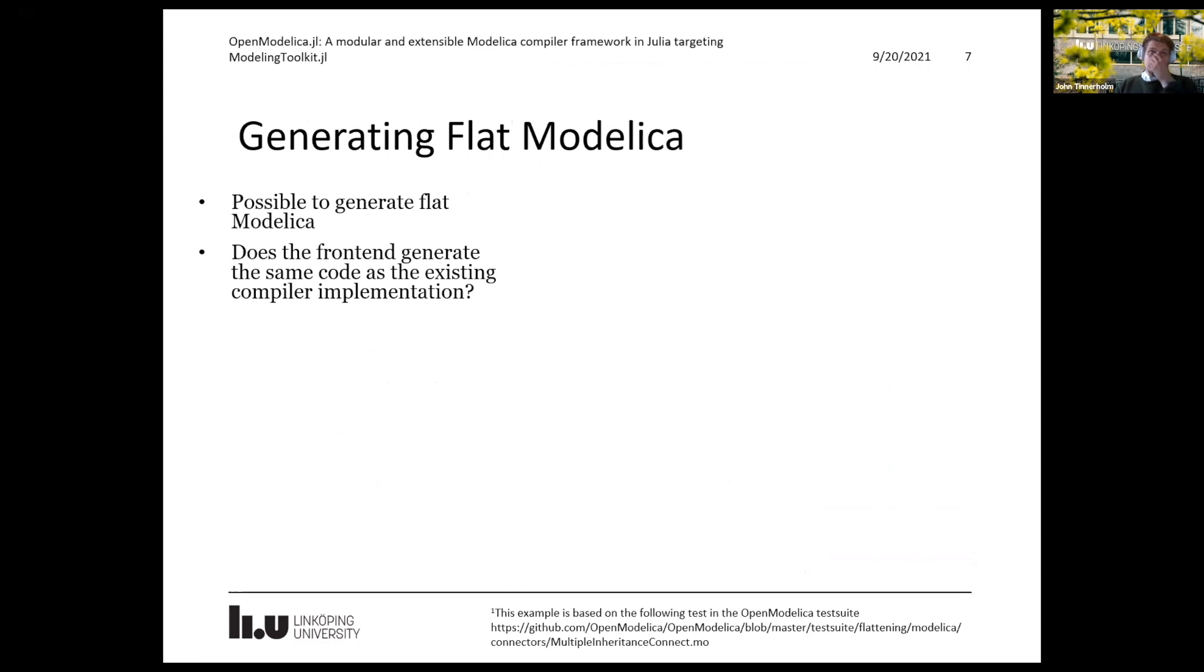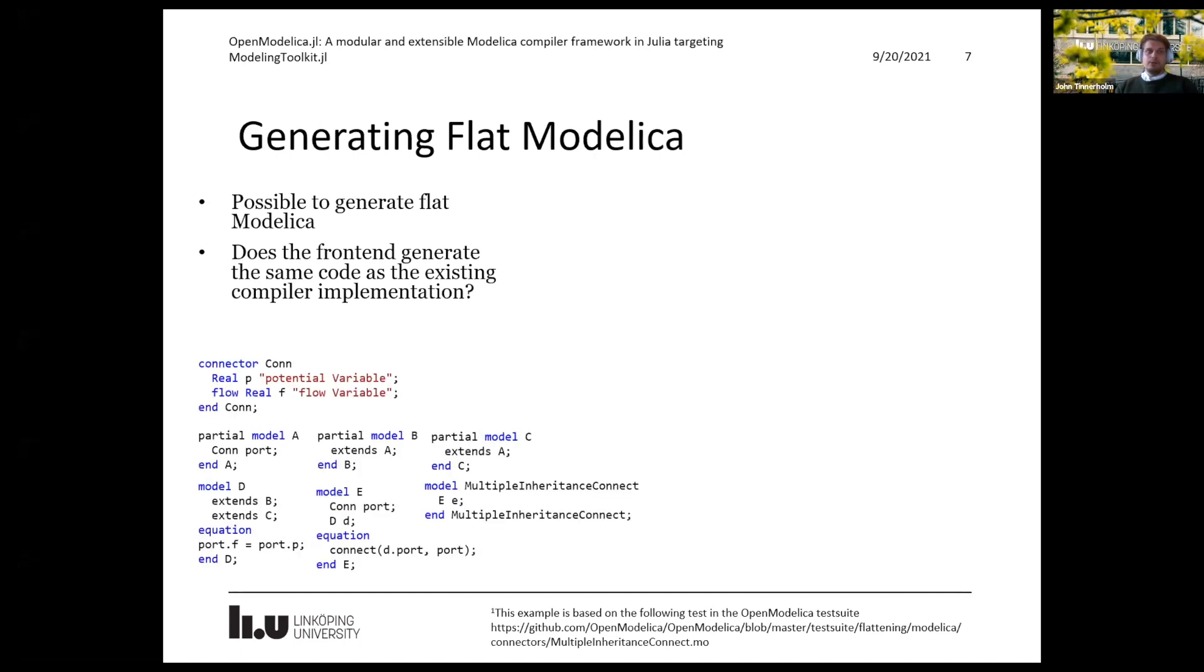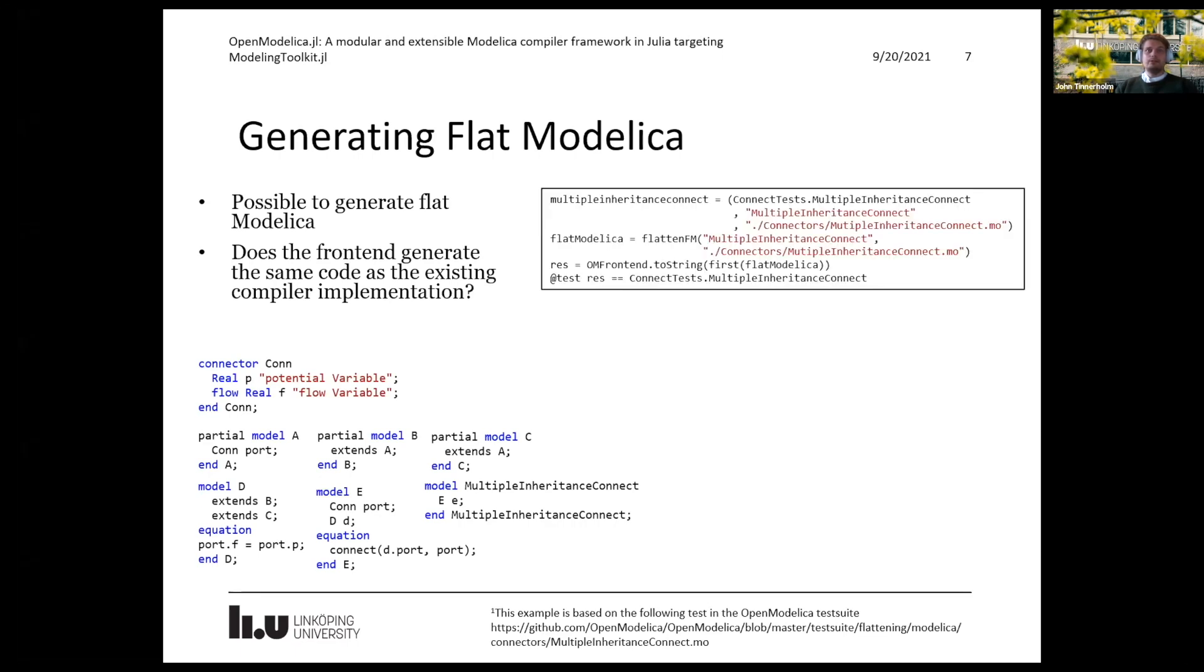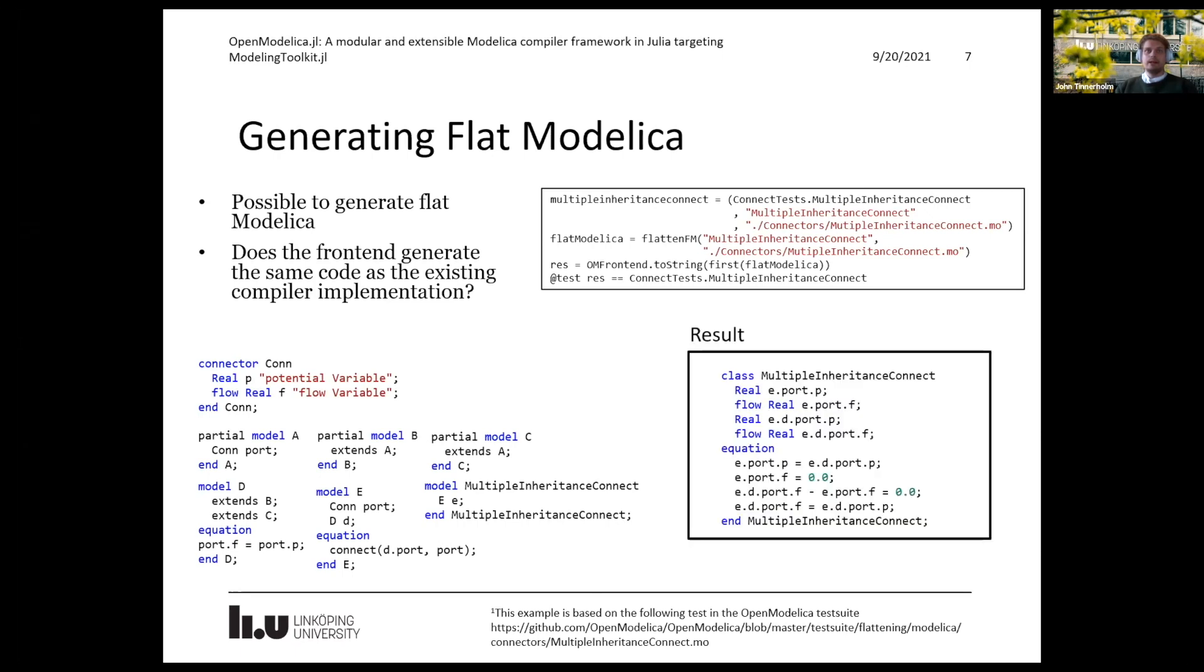So generating flat Modelica. Since we translated the frontend, the Modelica frontend, it's possible to generate Modelica code using our Julia framework as well. And we can use this to check, okay, does the frontend generate the same code as the original frontend in OpenModelica? So to the left here, we have a connector and some partial models. And we have this multiple inheritance connect, which seems to have lost an inheritance here. And from this, we can feed this into our backend and we get from our frontend using the following API calls. And we can get flat Modelica back. And I will illustrate this in a new share.